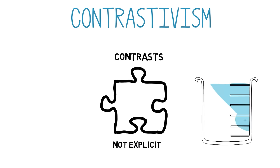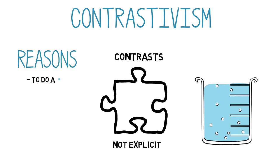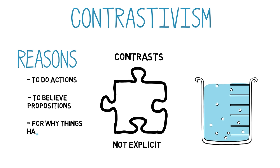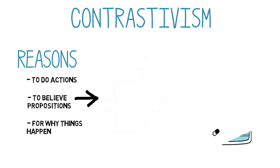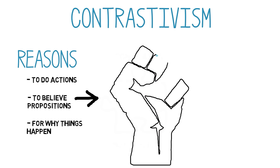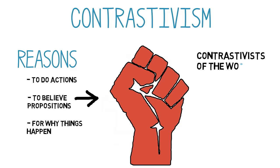Contrastivists can dissolve these philosophical puzzles by specifying the contrast in each crucial claim. This lesson applies to all kinds of reasons, including reasons to do actions like donating $10,000, reasons to believe propositions like the proposition that the animal in the cage is a monkey, and reasons why things happen, like rain. Since so many philosophical puzzles and paradoxes are about reasons of these three kinds, contrastivism promises to dissolve a great deal of old traditional philosophical debates. It also points the way towards more constructive discussions of related issues after contrasts are added. So join the revolution — contrastivists of the world, unite! You have nothing to lose but your unqualified judgments.